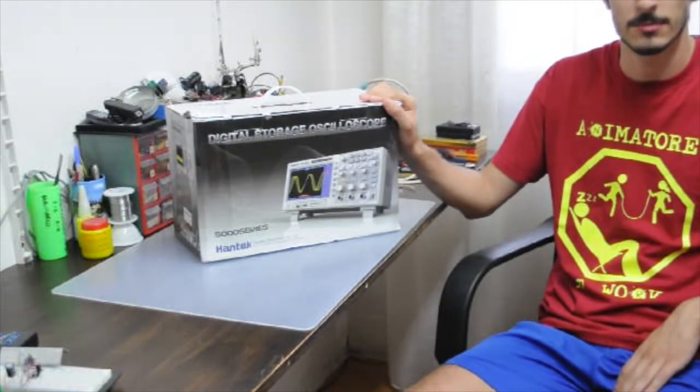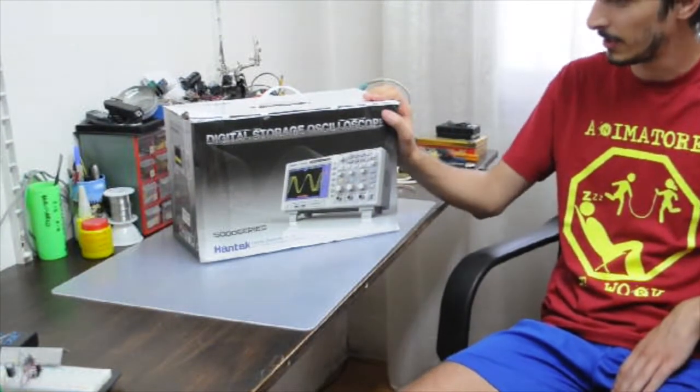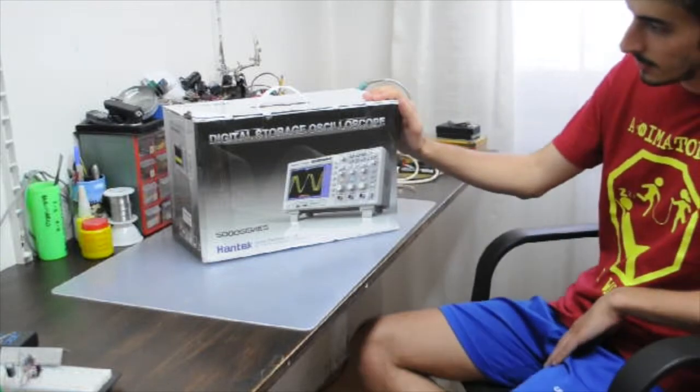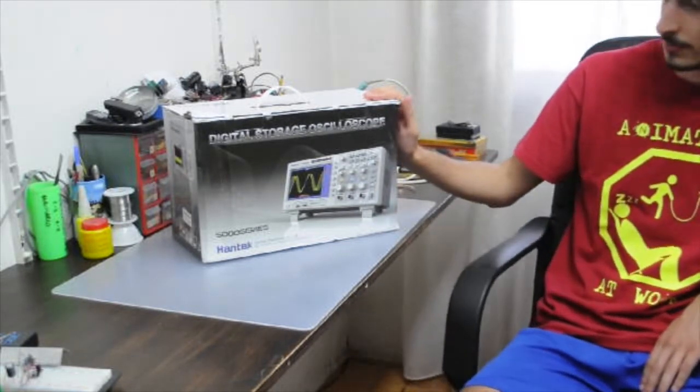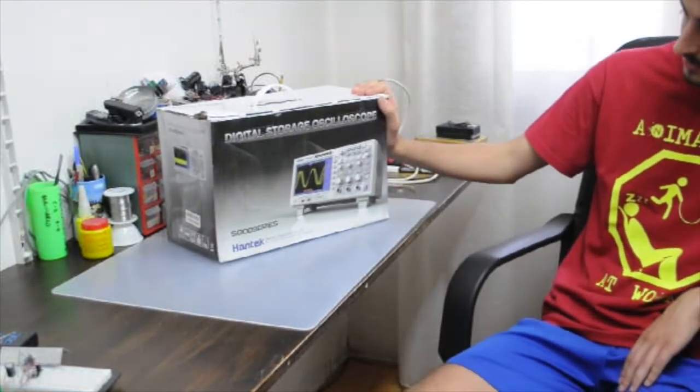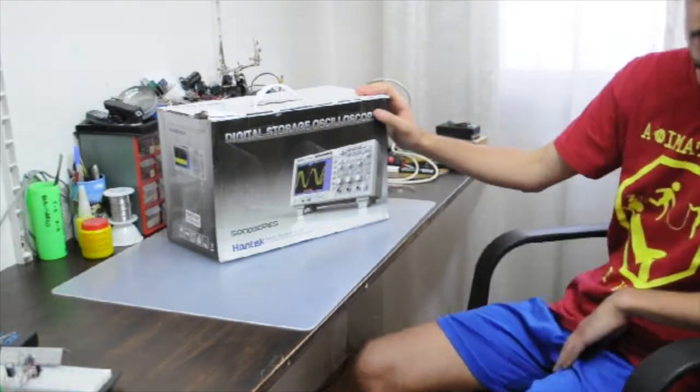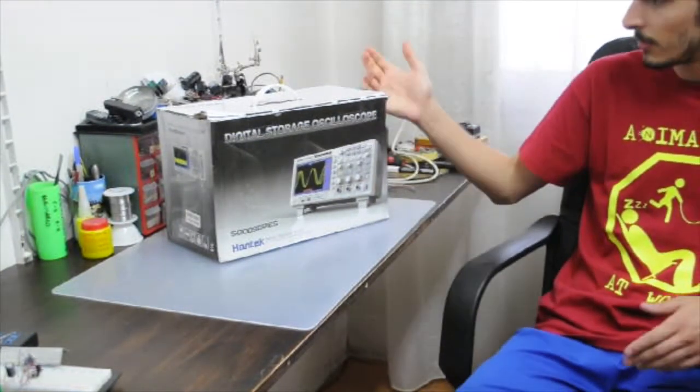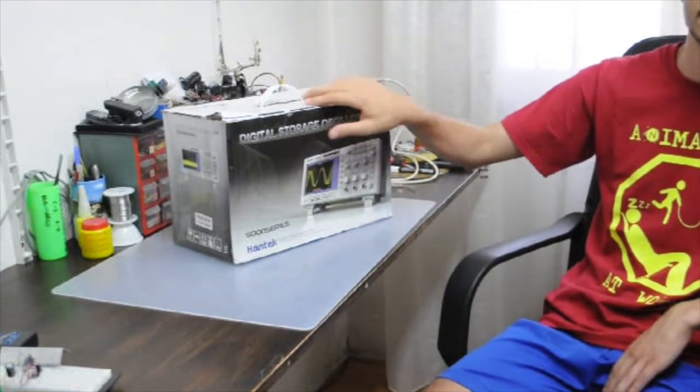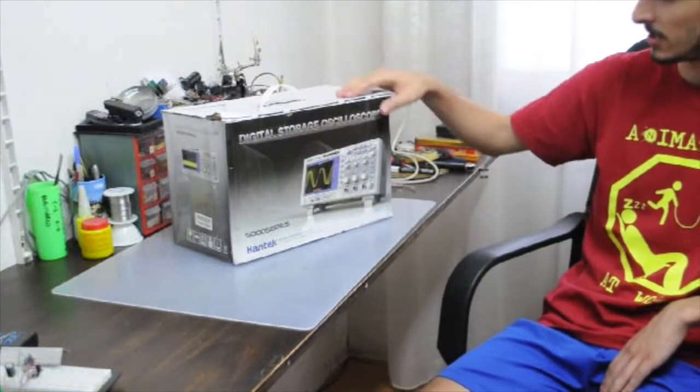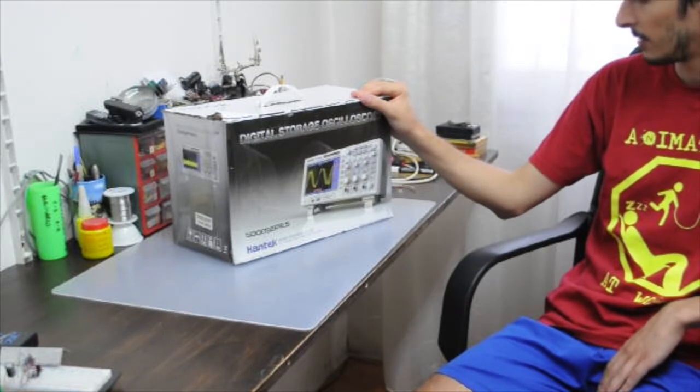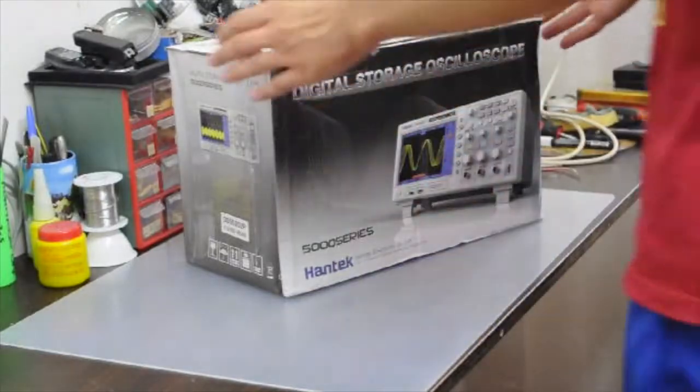Hi and welcome to my video blog. I'm here with my new digital storage oscilloscope, the Hantek 5000 series, the 5202B. I'm going to unpack it and just try to see what I bought. Here we go.